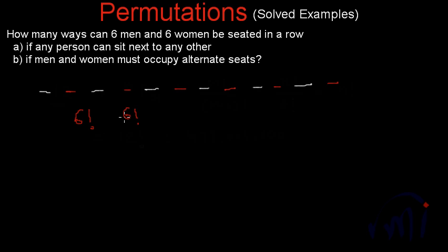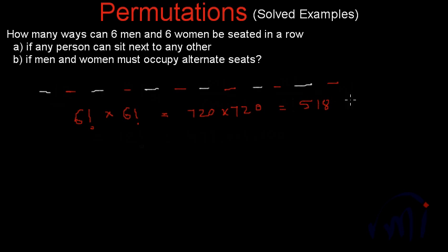The number of ways in which six men can occupy the white places will be 6 factorial, and the number of ways in which six women can occupy the red places will also be 6 factorial. Both these sets of places are supposed to be occupied, so these get multiplied. This will be equal to 720 multiplied by 720 — since 6 factorial is 720 — which equals 518,400.